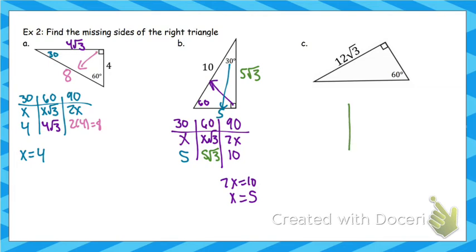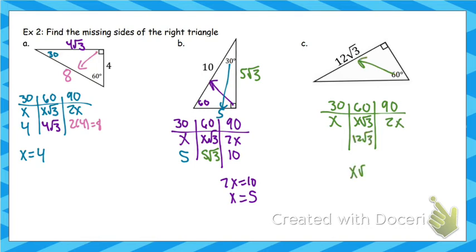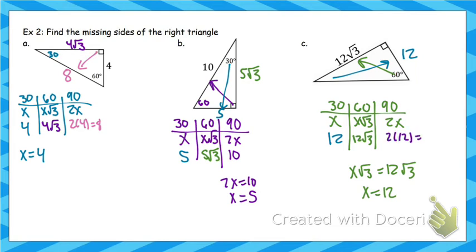The last of the easier ones before we look at the harder ones. Chart: 30, 60, 90, with x, x√3, 2x. Since 12√3 is across from 60, we set x√3 equal to 12√3, so x equals 12. Across from 30 is 12, and across from 90 is 24.